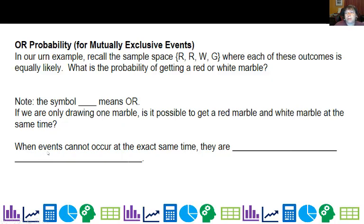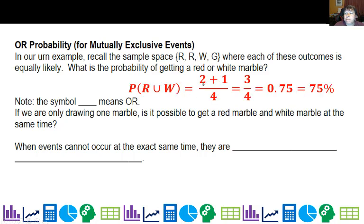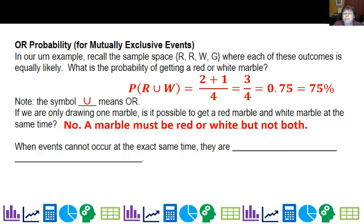Now we also have or probability. So what's the probability of getting a red or a white marble? Well, there are two reds and one white. So I could say the probability of red or white is 2 plus the 1 or 3 fourths, which gives me 0.75 or 75 percent. Notice that that symbol right there means or. If we're only drawing one marble, is it possible to get red and white marble at the same time? No, because a marble must be red or white, cannot be both. When two things cannot occur at the same time, we say they are mutually exclusive. And so that's an important thing to keep in mind for probability.